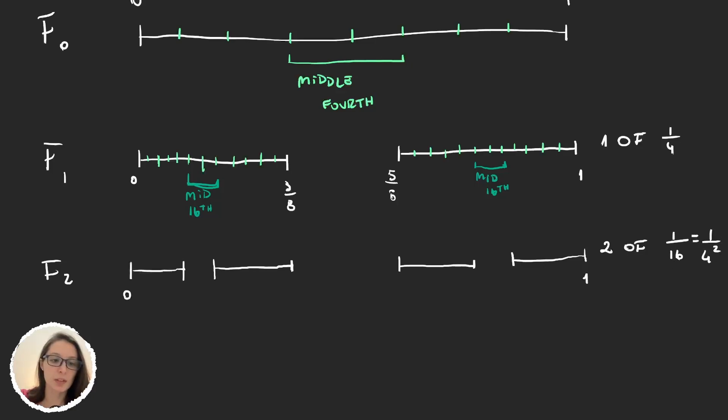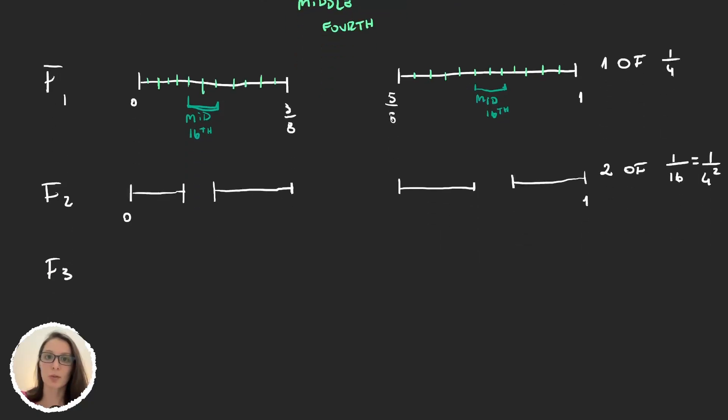1/16 is 1/4². So we can say that in the third step, we would be removing—and I'm just gonna do a drawing so that it's a bit more visual—but it will be something like this. And so here we are removing 1, 2, 3, 4 intervals. And the side length would be 1/64, and 1/64 is 1/4³.